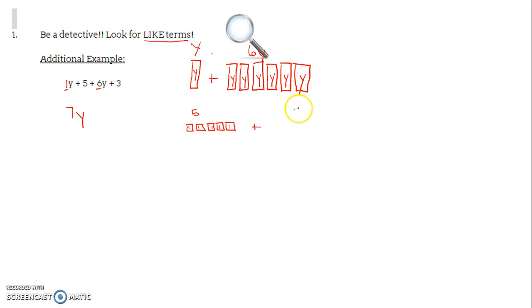And if I'm going to add to that the constant of 3, then you're like, oh, okay, my constants, my numbers without a variable attached, without the y, just are my little squares. 1, 2, 3.